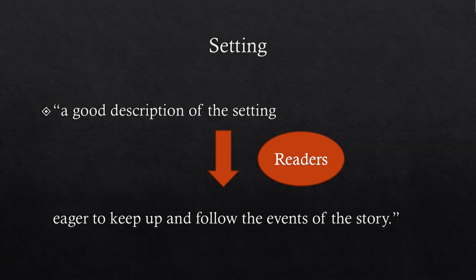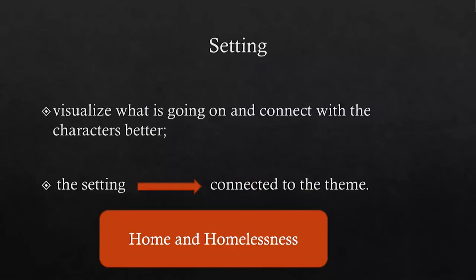The setting can have narrative functions that can complicate the plot and also at times help to resolve it. A good description of the setting is key to the success of a story. Sometimes such exciting descriptions will encourage readers to follow the events of the story more closely. In other words, the setting intensifies the fictional landscape. Furthermore, settings can help the reader visualize what is going on and connect with the characters better. If the story world is stronger, the identification with what is happening will be greater for readers.